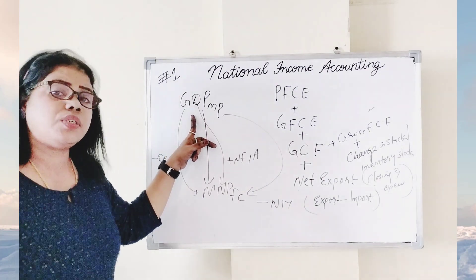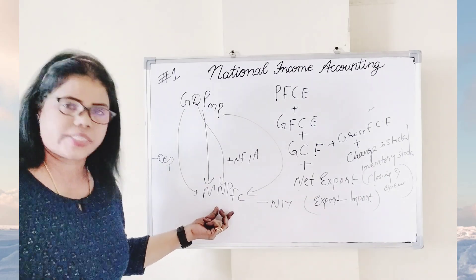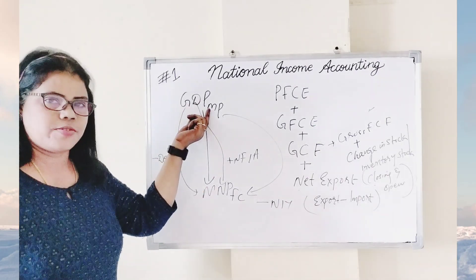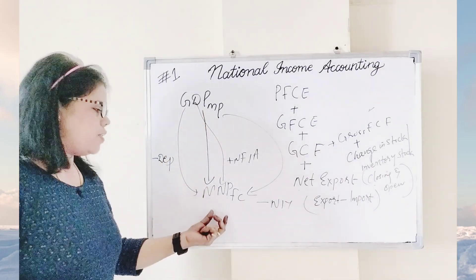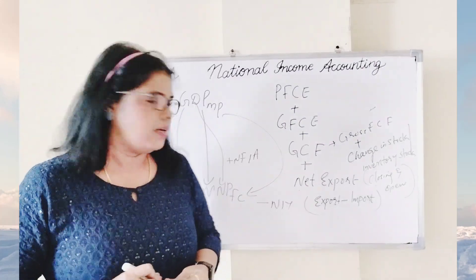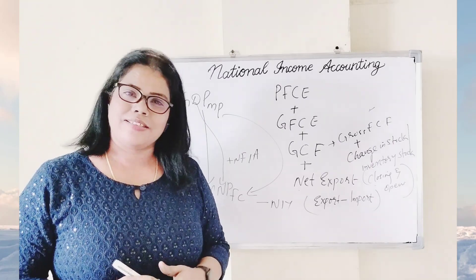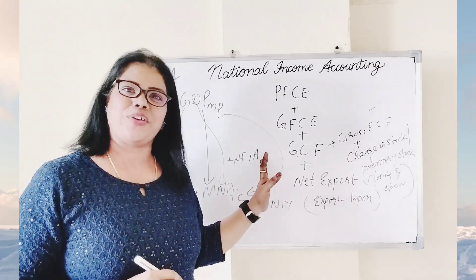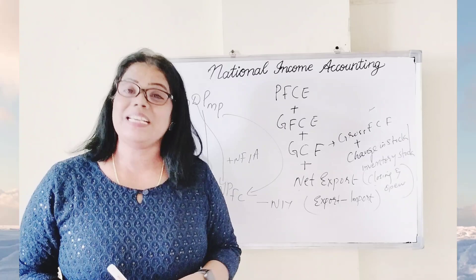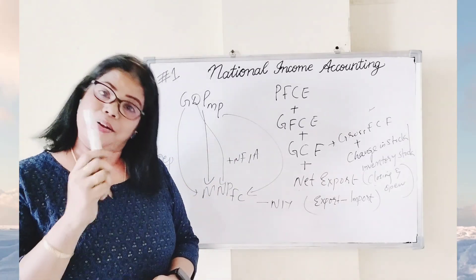And how to convert GDP at MP to NNP at FC? NNP at FC means national income. Here we are getting domestic income; here we have to calculate national income. Today's topic — expenditure method — is over. Next week we are beginning with the money and banking chapter. Don't miss it and watch it.